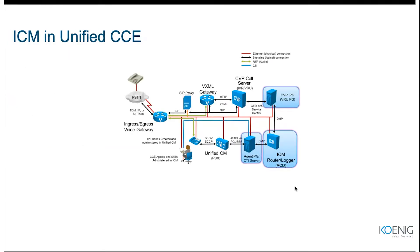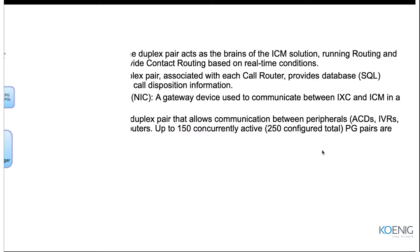Here is a high-level picture of the ICM. You can see ICM sitting in the network connecting with other components — UCM on one side and CVP on another. Within ICM you have a router, a logger, and a PG. The PG is placed outside in this topology just for clarity, but it is always a part of ICM and is used to connect other devices.